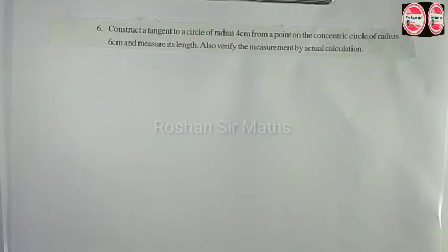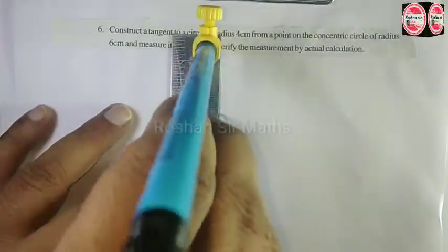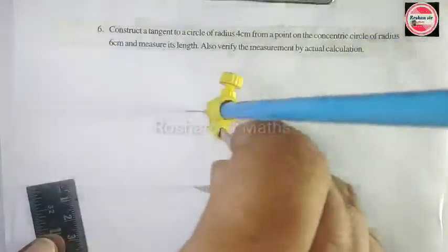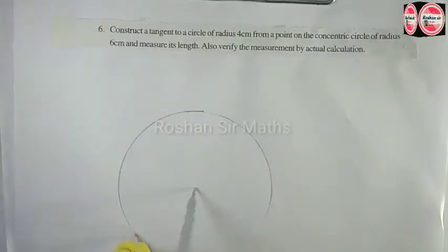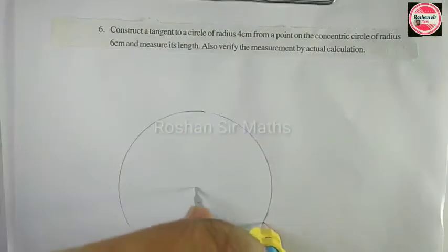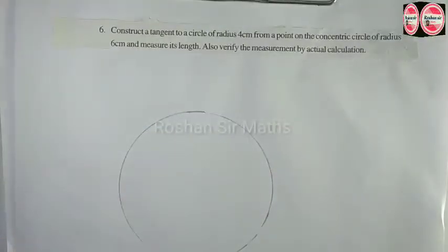Why can we draw a concentric circle? First of all, we will take this scale. We will take 4 centimeter circle. We can draw this circle. This is the 4 centimeter circle.